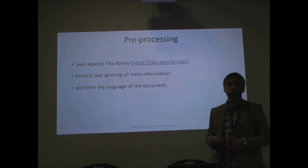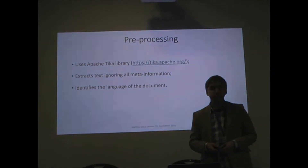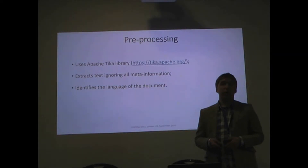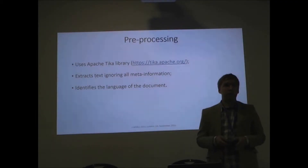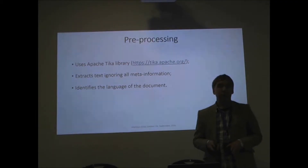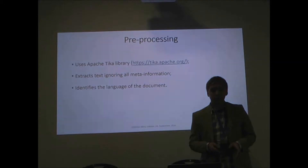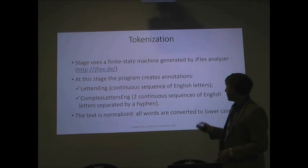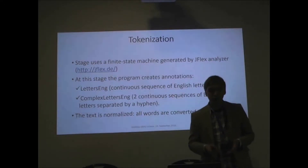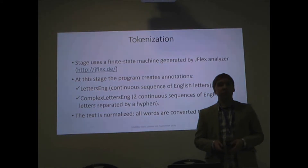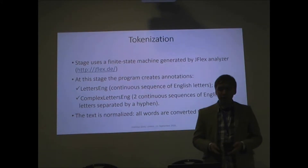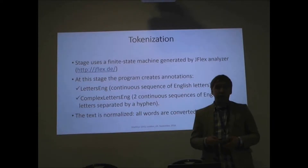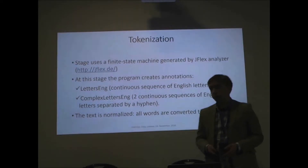First we need to preprocess our text. We do this using the Apache Tika library. We extract all text ignoring meta information and identify the language of the document. After that we do tokenization: we use a finite state machine generated by the GFlex Analyzer and normalize the text at this stage.